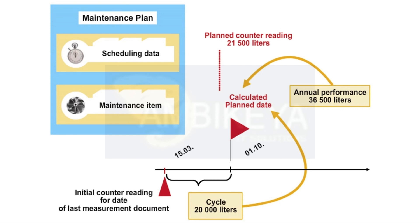By adding this time period to the start date of the maintenance plan, a new planned date is determined. At the same time, a new planned counter reading is calculated by adding the cycle value to the current counter reading.